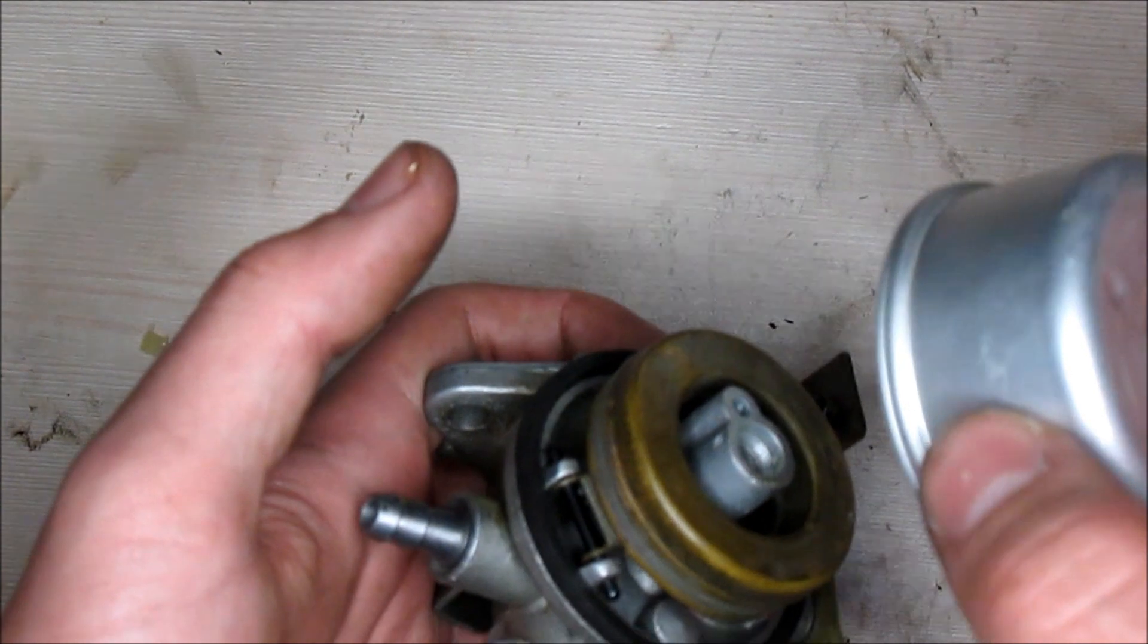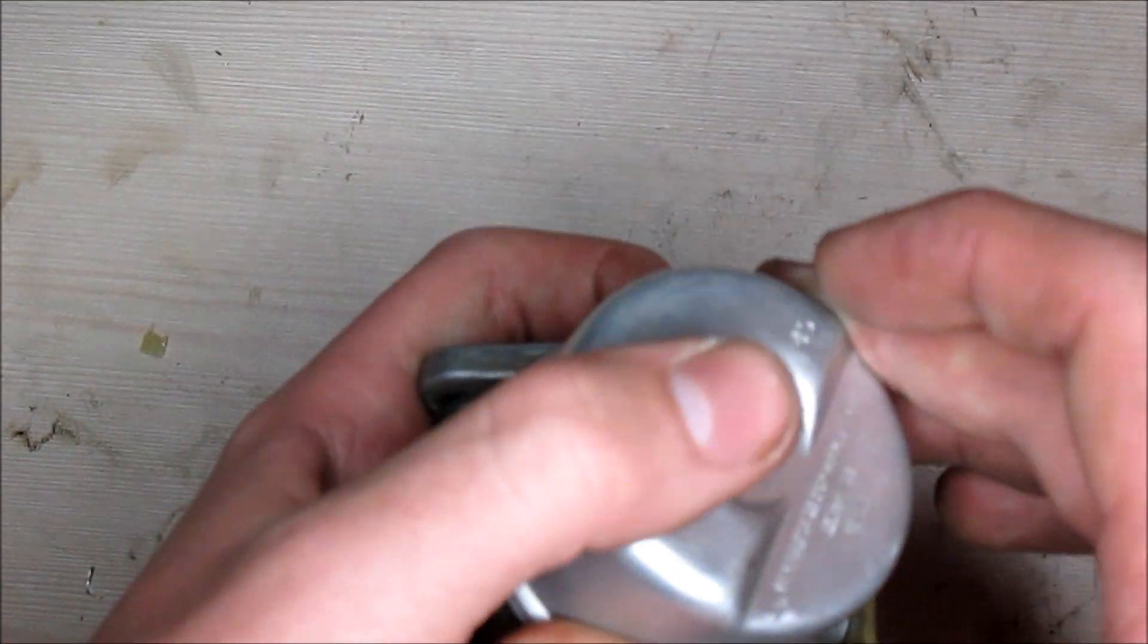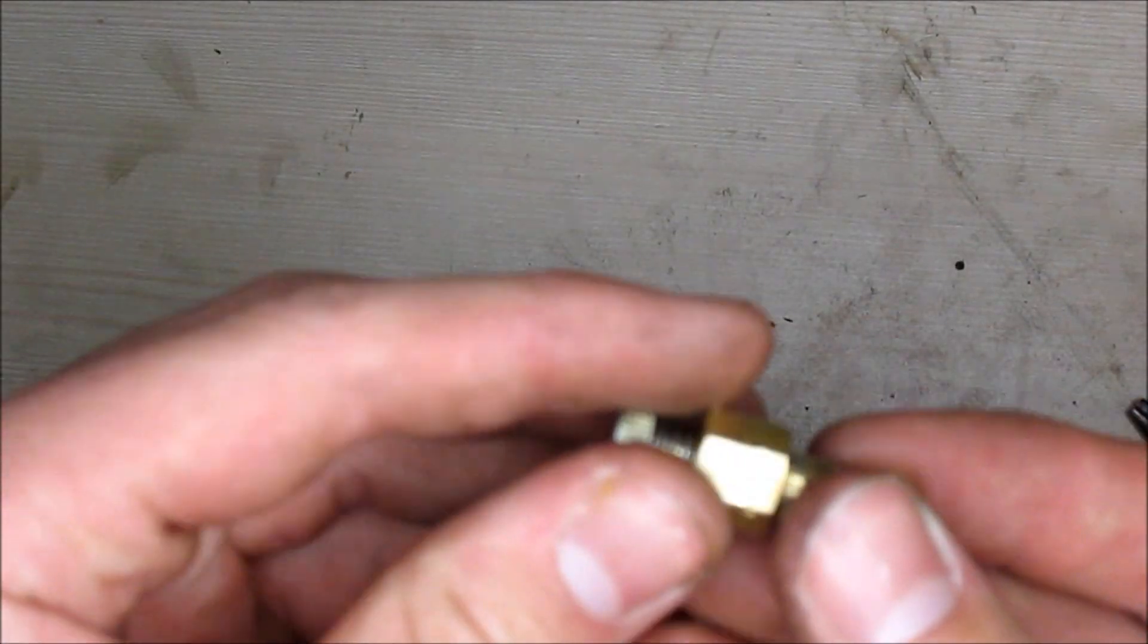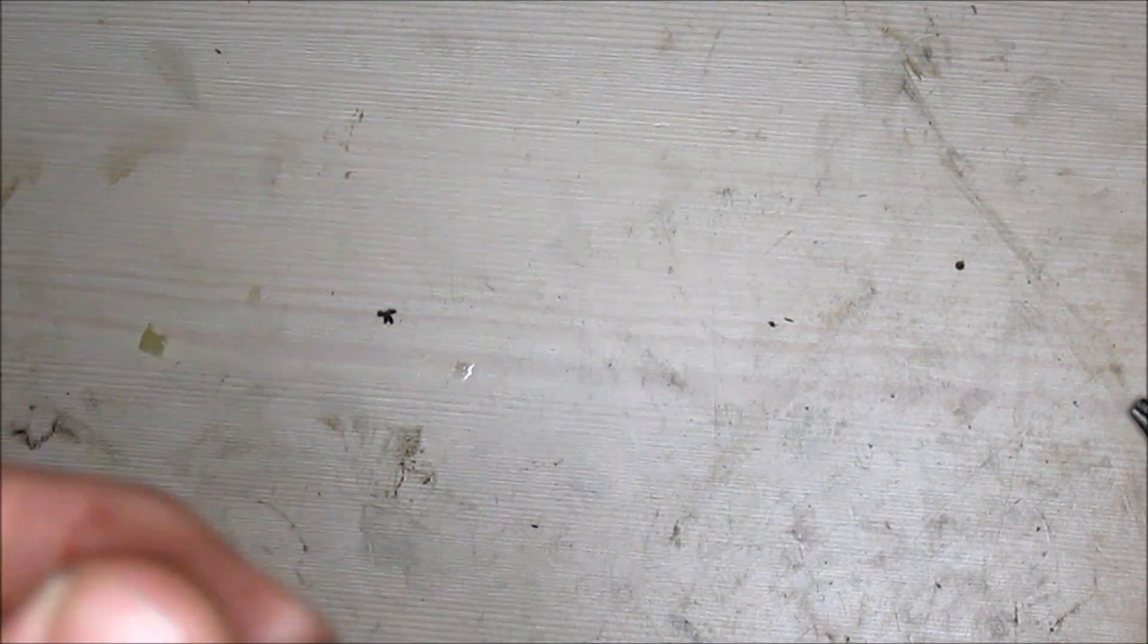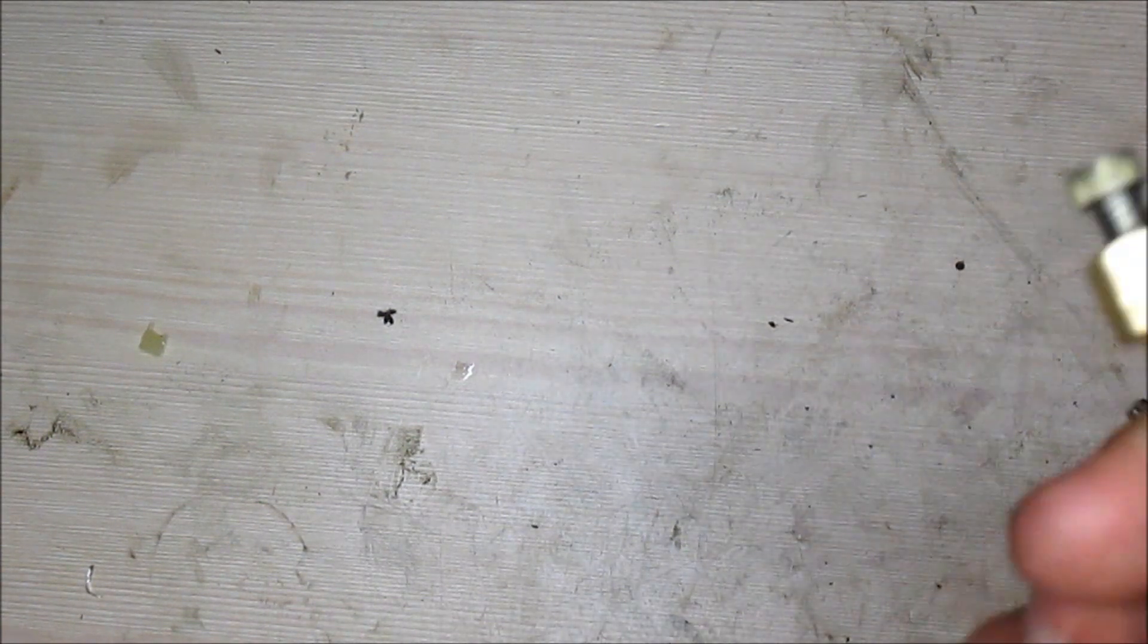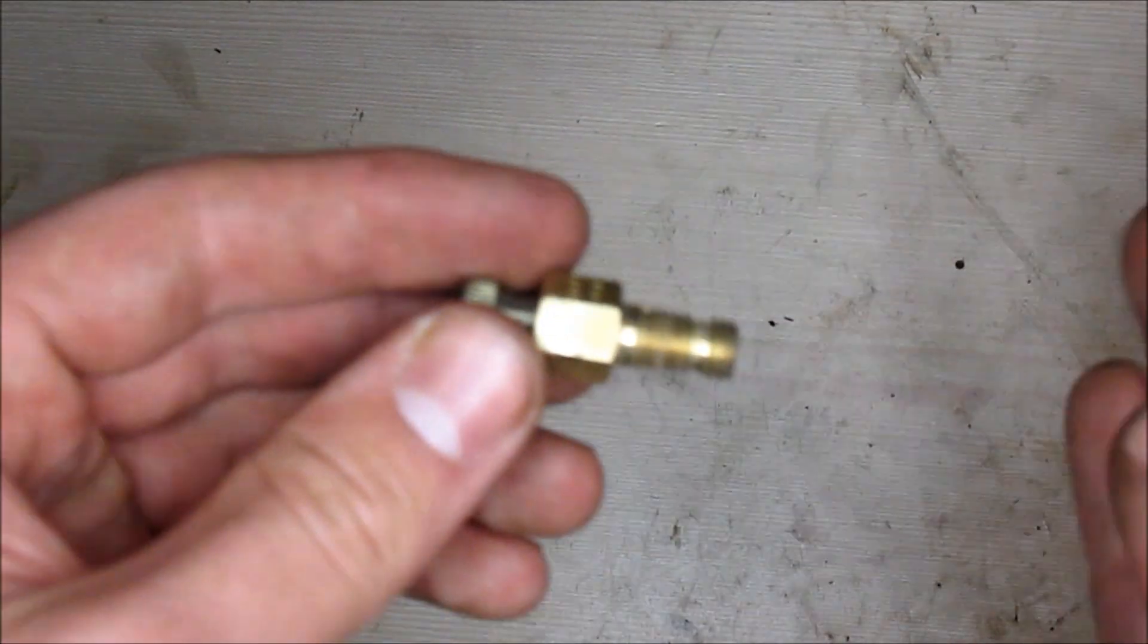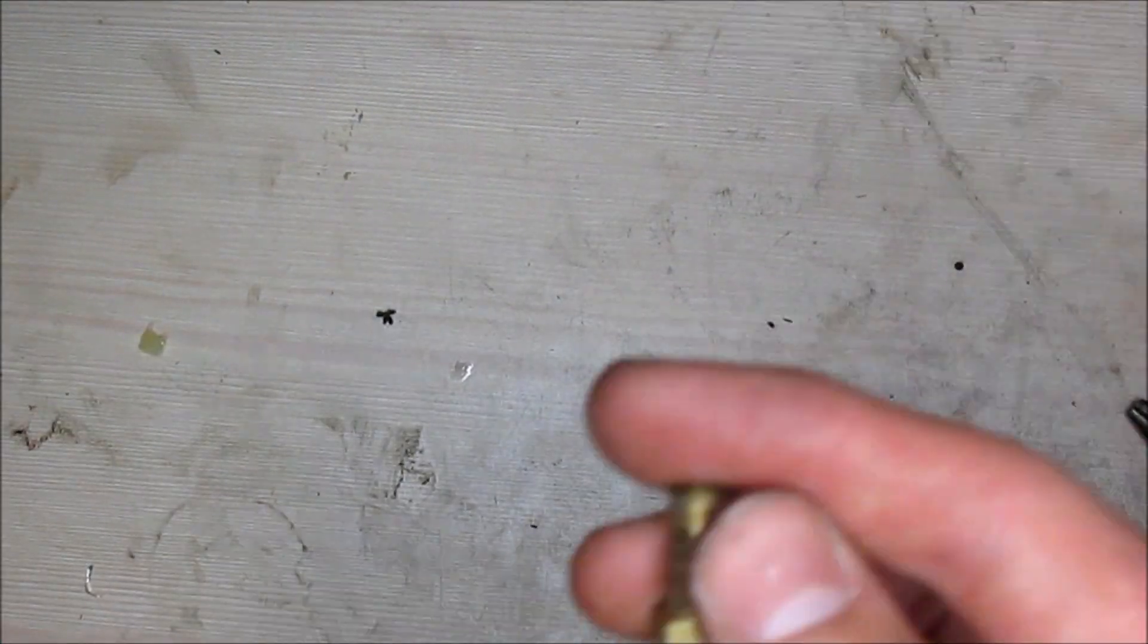We can go ahead and put the bowl cover back on. You want to check out the jet. The jet itself looks pretty good. If you hold it up to the light in the small hole, if you can see light through it, then you're good. If not, you can always get a small nail and go through there and clean out the jet. This is all good, so we can go ahead and put it back in.